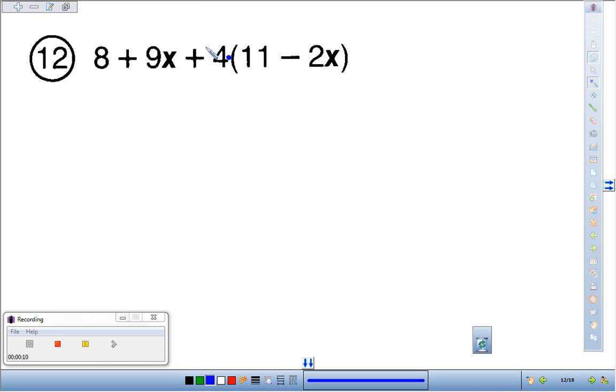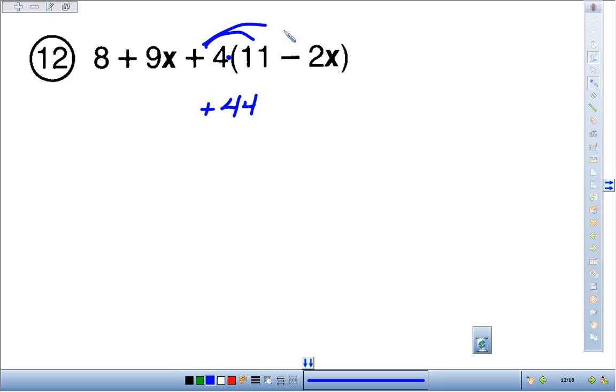So, distributive property: a positive 4 times 11 is a positive 44. I'm going to put the plus there just because I know I've got some other stuff out here. 4 times negative 2x. 4 times negative 2 is negative 8. I'll throw the x on there.